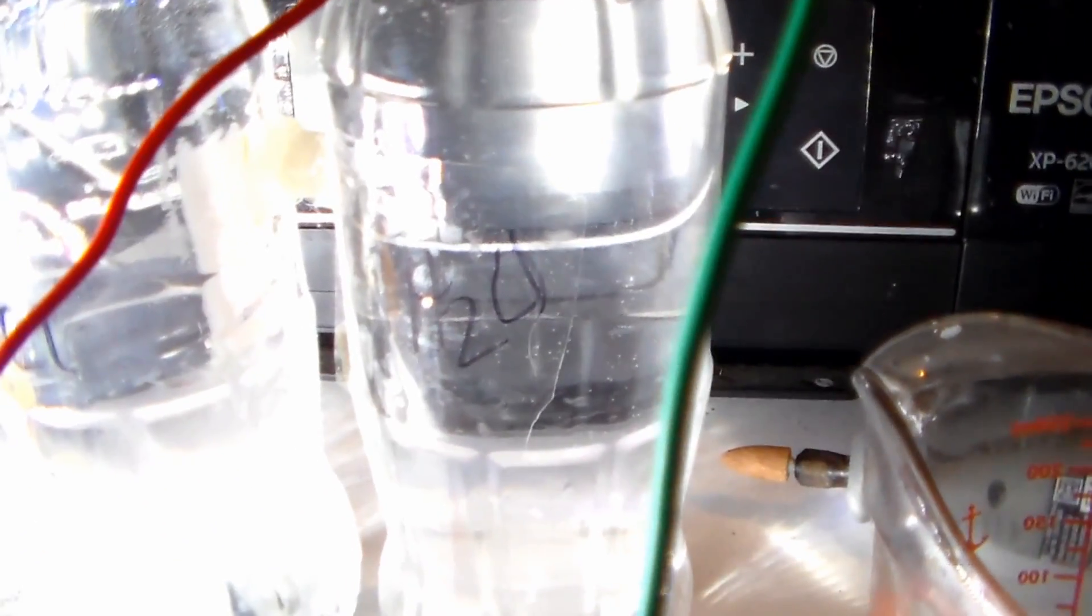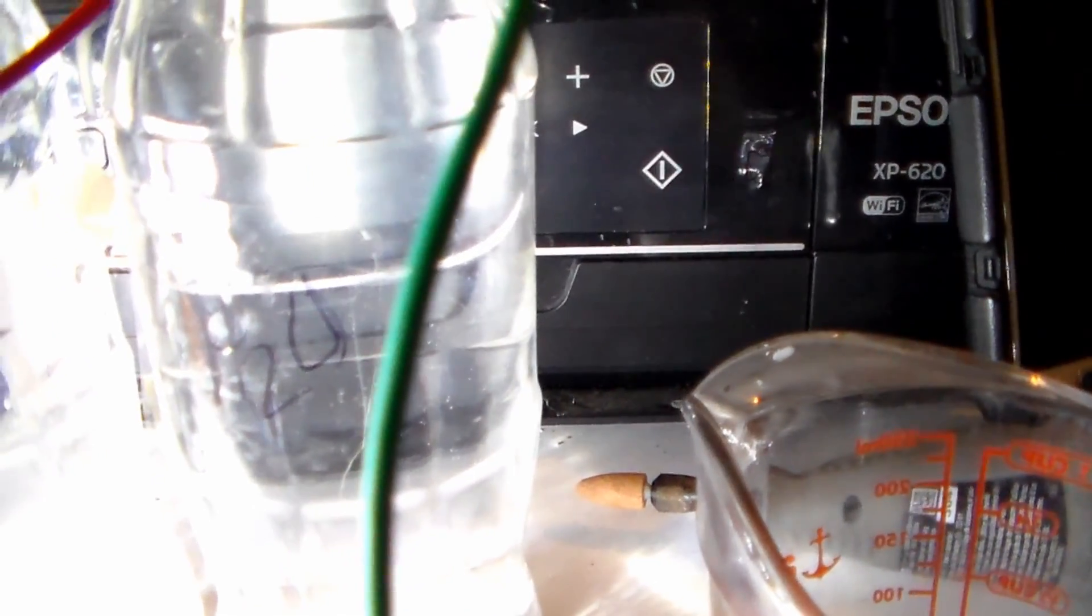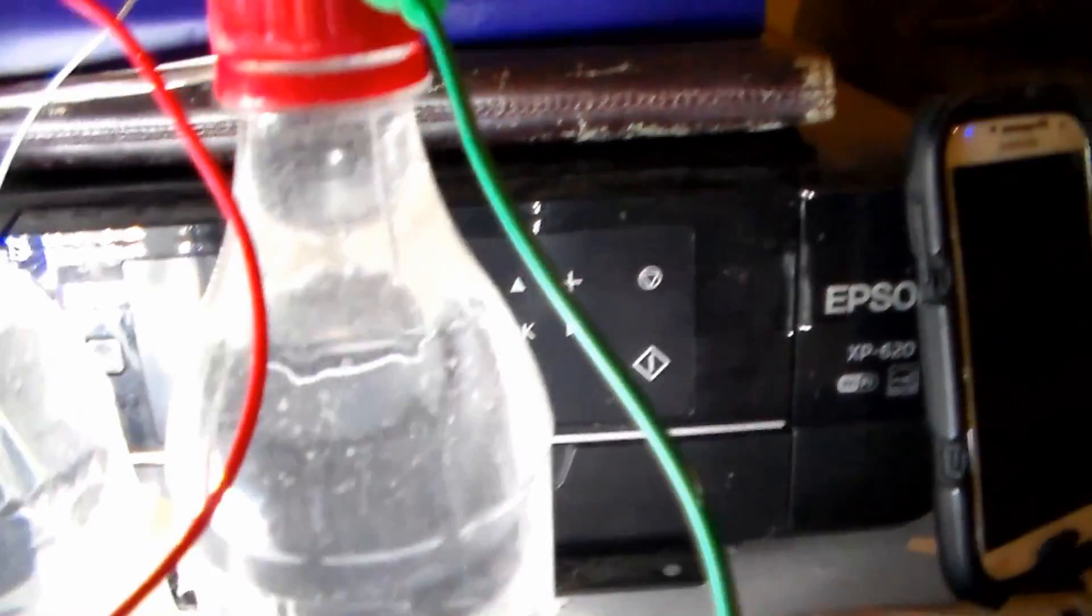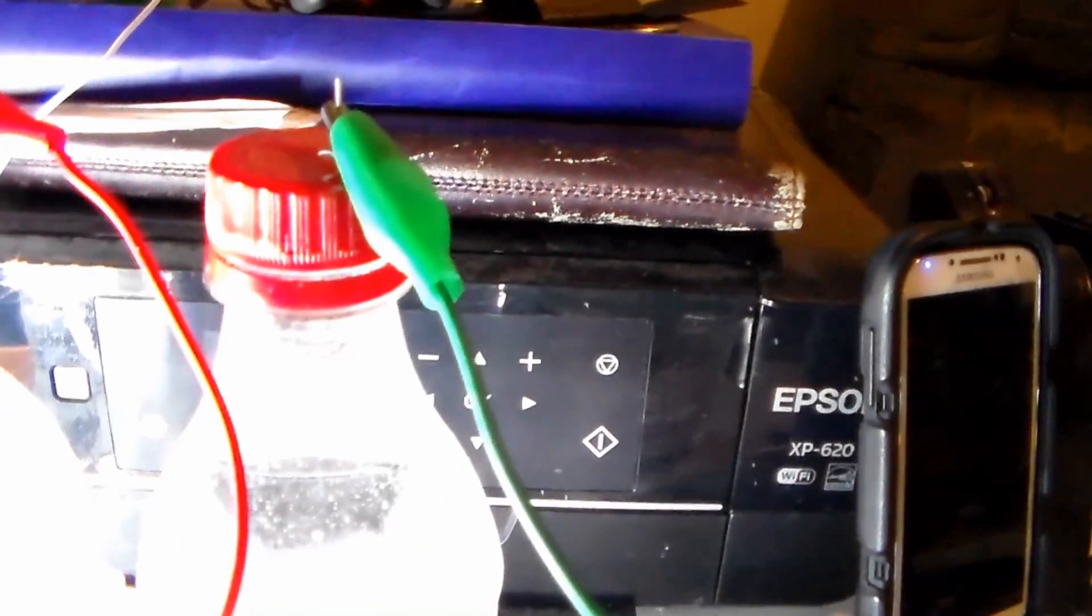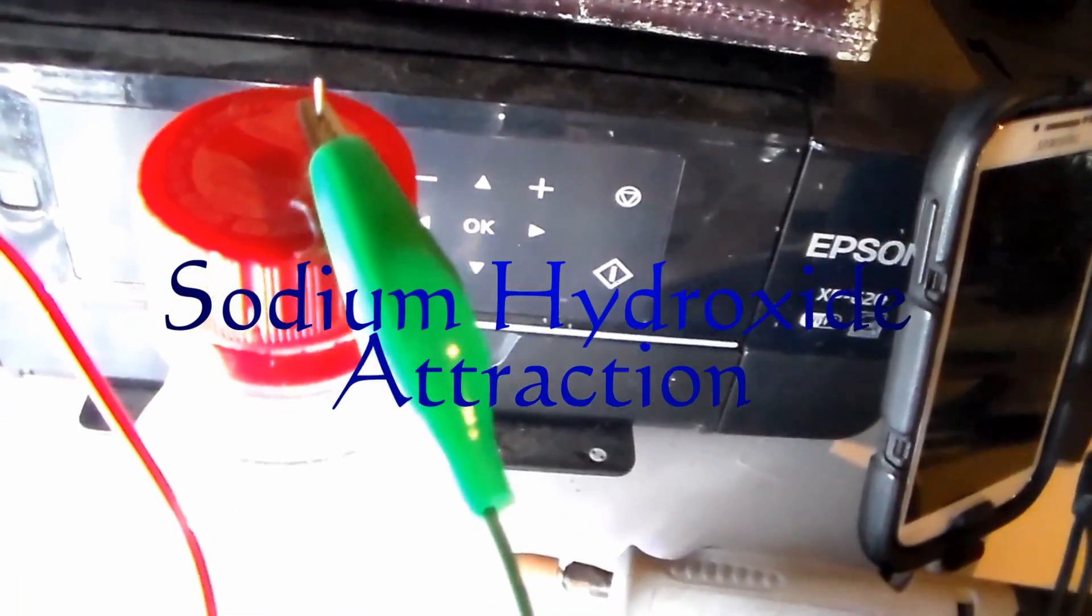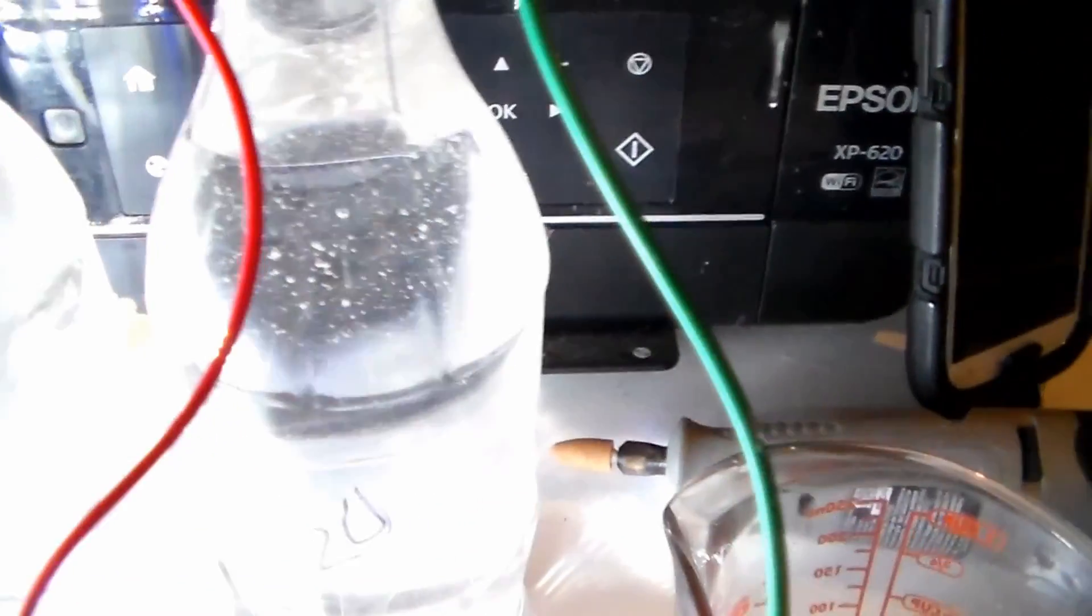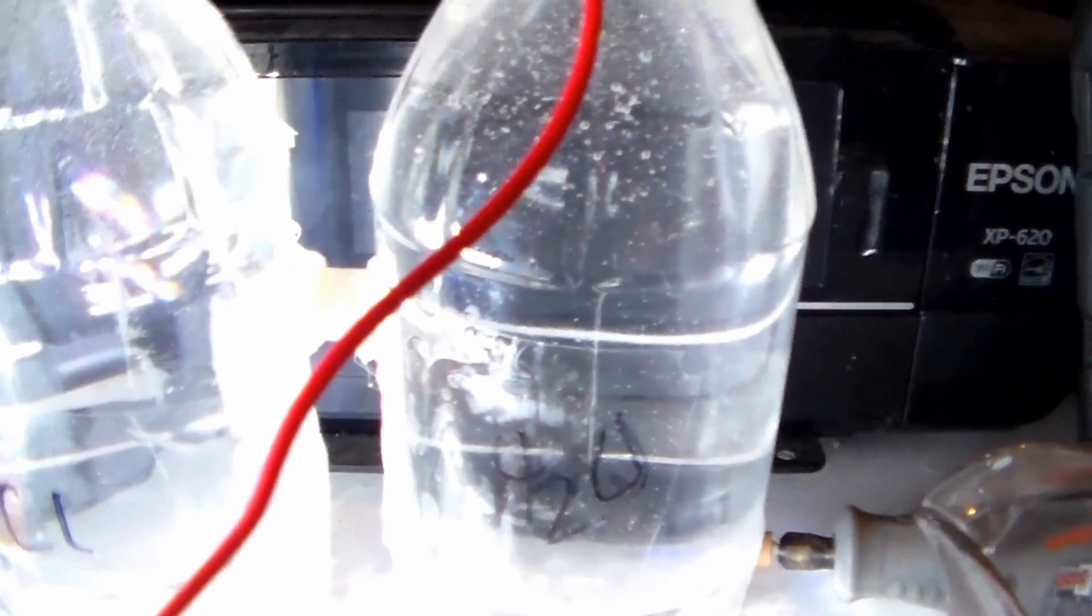Over here is where I'm going to extract the sodium hydroxide from the pure water side. It's attached to the negative lead of that carbon pencil fiber, and it's going to pull it through.